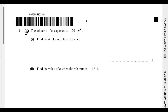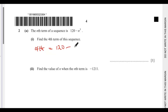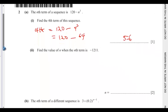Question 2a: the nth term of a sequence is 120 minus n to the power of 3. Find the fourth term of this sequence. So the fourth term equals 120 minus 4 to the power of 3, which is 120 minus 64, giving us 56.